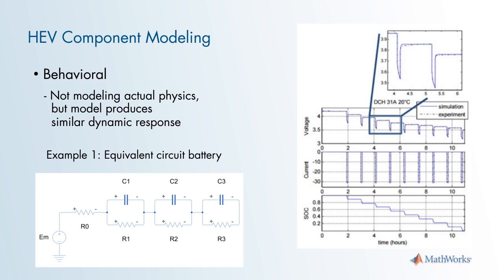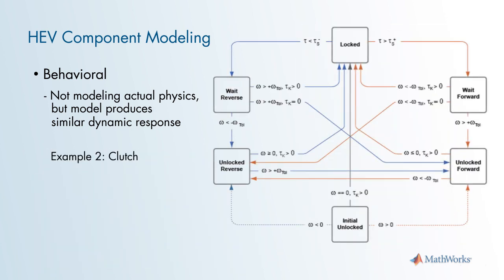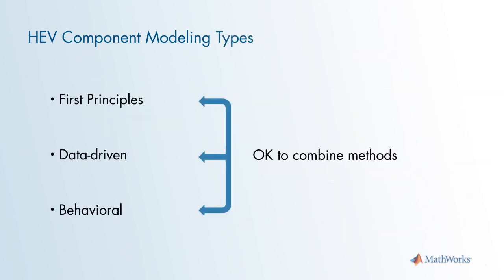If you do an internet search on MathWorks battery modeling, you will find the MathWorks webpage containing this content. Another example of a behavioral model is modeling a clutch — shown here is the abstraction of state machine logic of a bidirectional clutch that transitions from its locked to unlocked states, with appropriate first principle equations applied within each state.